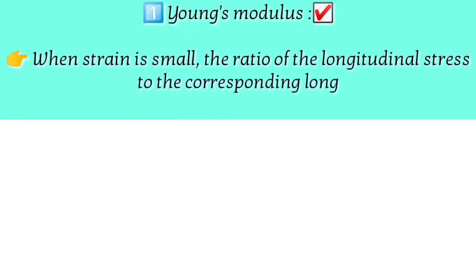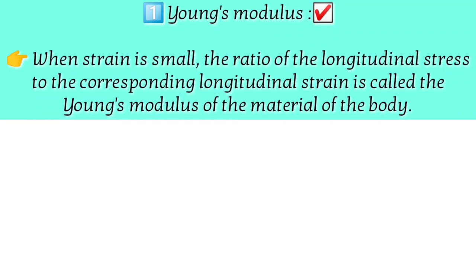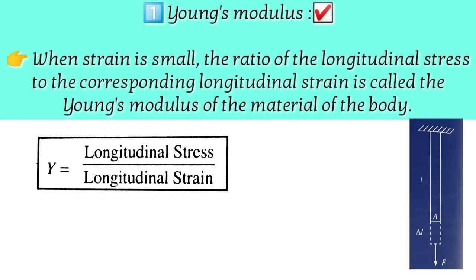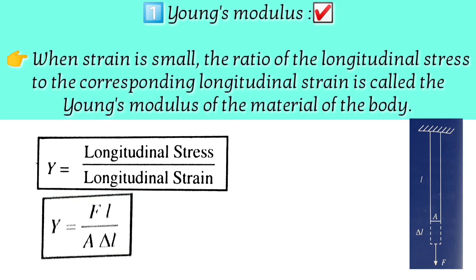Young's modulus: when the strain is small, the ratio of longitudinal stress to the corresponding longitudinal strain is called Young's modulus — Y equals longitudinal stress divided by longitudinal strain. Consider a rod of length L and cross-sectional area A with force F applied, causing an elongation delta L. The formula is Y = FL / (A · delta L). If the rod elongates due to its own weight, F can be replaced by mg.